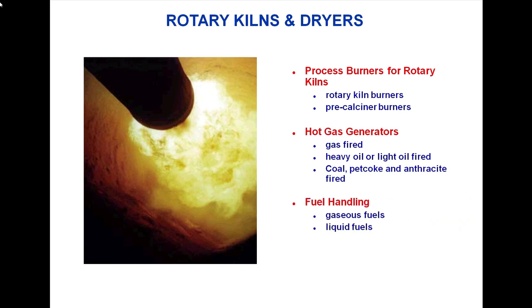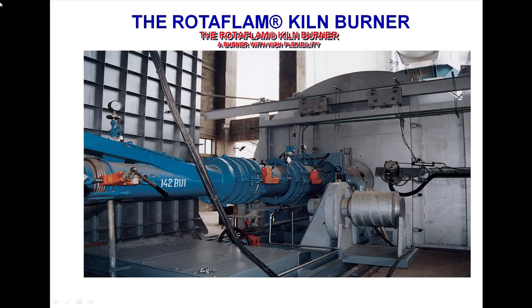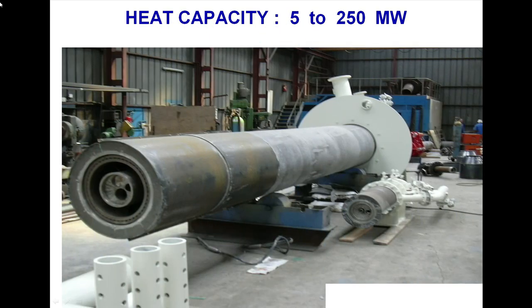Hot gas generators: gas-fire type, heavy oil or light oil fire type, coal with coke and anthracite fire type. Fuel handling types include gaseous fuels, liquid fuels, accessories, and kiln burner types — as you can see in the picture, the type of arrangements. Heat capacity ranges from 5.2 to 50 megawatts.